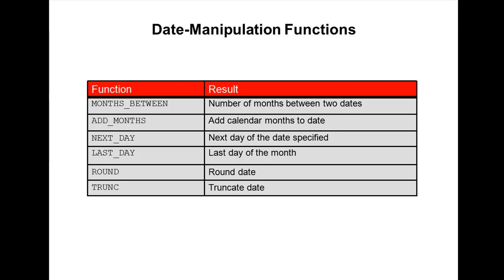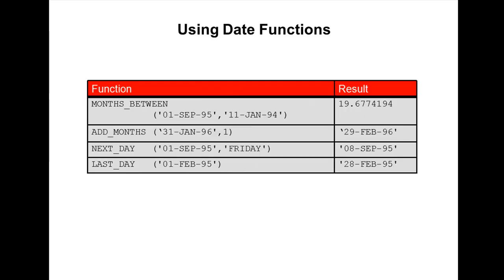ADD_MONTHS adds a calendar month to a date. NEXT_DAY gives you the next day of the specified date, and LAST_DAY gives you the last day of the month. ROUND rounds the date, and TRUNCATE truncates the date. Let me show you some examples.